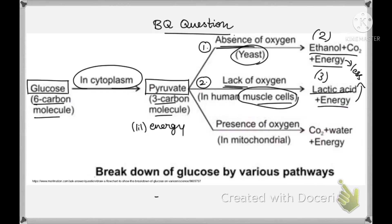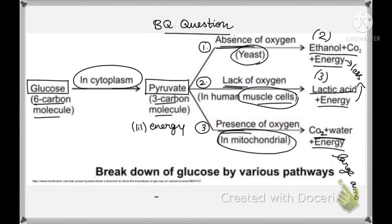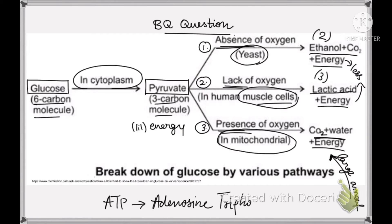The third condition occurs in the presence of sufficient oxygen, and this generally takes place in the mitochondria — the powerhouse of the cell. The products are CO2, water, and energy, and we get a much greater amount of energy in this case, which generally occurs in all cells in our body. This energy released during cellular respiration is immediately synthesized and stored as ATP molecules, which act as fuel for all cellular activities. ATP is the energy currency for most cellular processes.